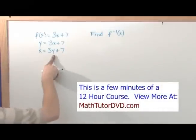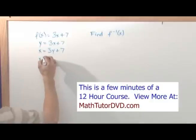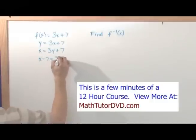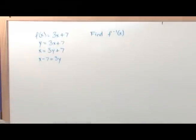The next step is just to solve for y. So moving the 7 over, x minus 7 is equal to 3y. I subtracted 7 from both sides and moving it over there.